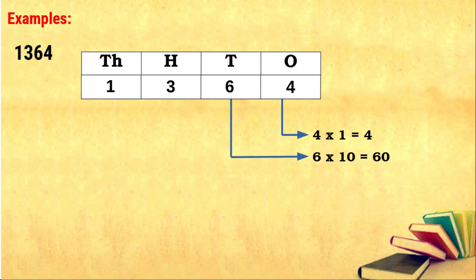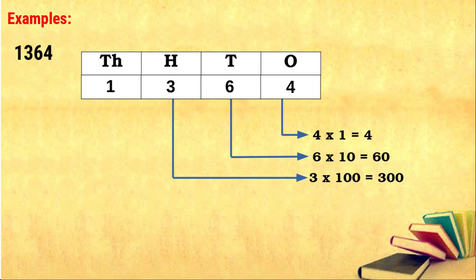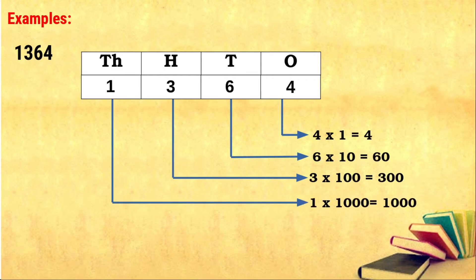Next, moving to the hundreds place — that is three. Three lies in the hundreds place, so the place value of three is three times one hundred, that is three hundred. One lies in the thousands place, so the place value of one is one times one thousand, that is one thousand. So the place values are: four is four, six is sixty, three is three hundred, and one is one thousand.